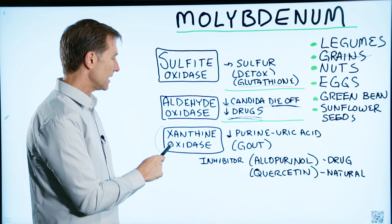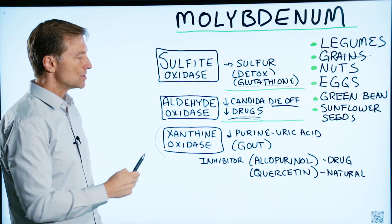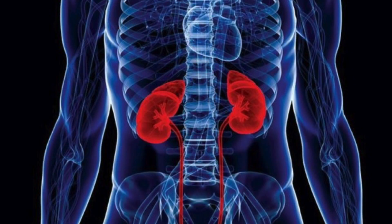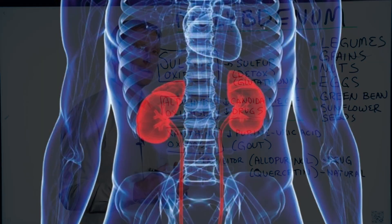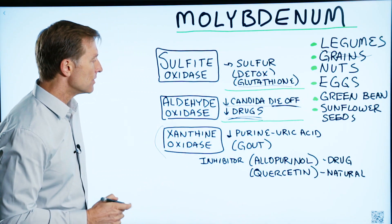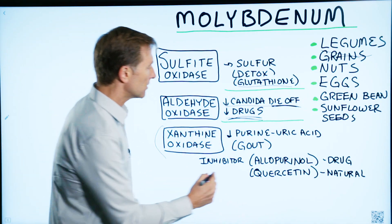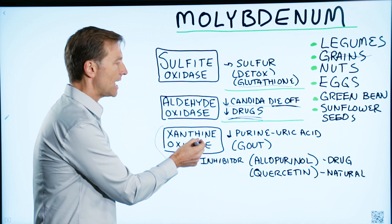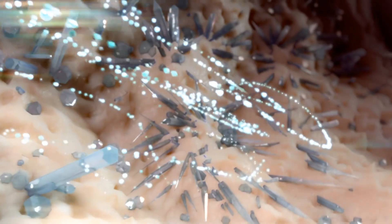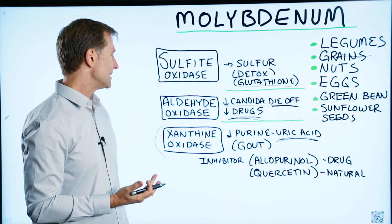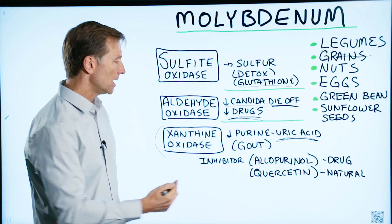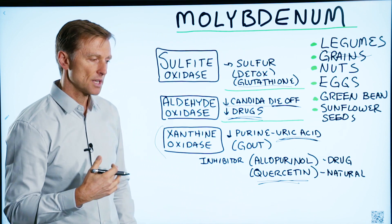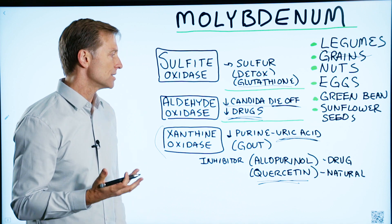Then we have another enzyme called xanthine oxidase, which turns certain proteins into uric acid. And if your kidneys are sluggish and you're sensitive to uric acid, you can get gout. There's a medication used for gout called allopurinol, and basically what that does is inhibit this enzyme so you're not making so much uric acid. There are also natural xanthine oxidase inhibitors — quercetin is one, and phytic acid and different flavonoids as well.